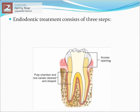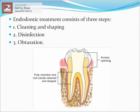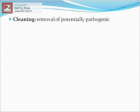Endodontic treatment consists of three steps. The first is the cleaning and shaping of the root canal system, in which the pulp tissues, necrotic tissues, and necrotic dentine will be removed using endodontic instruments. The second step is disinfection, in which chemicals are used to kill microbes in the root canal system. The final step is obturation, which is filling the root canal space.